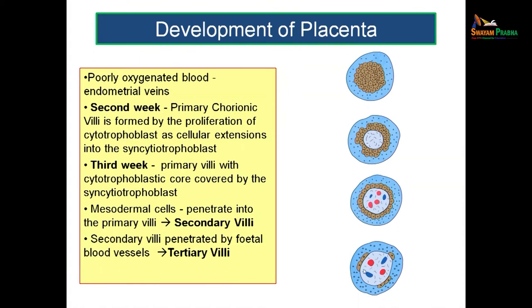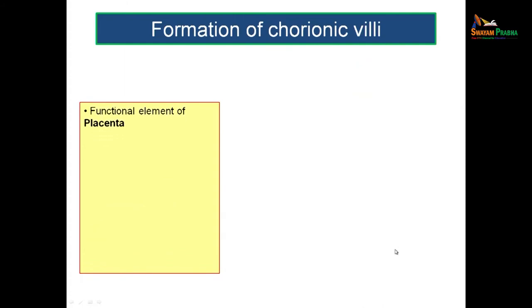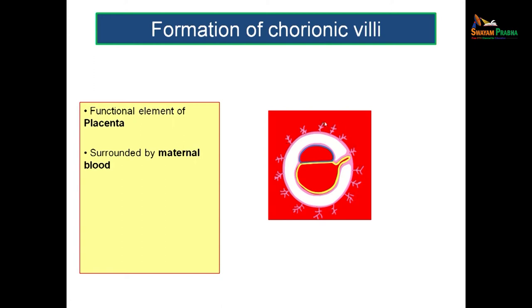Toward term, the fetal capillaries move toward the periphery and some cytotrophoblast cells become absent, making the villus a term villus. The chorionic villus is considered the functional element of the placenta. In the beginning, the entire blastocyst is covered by cytotrophoblast and syncytiotrophoblast, and from each cytotrophoblast layer the primary chorionic villi form, surrounded by maternal blood. The fetal capillaries are within the villi while the maternal blood surrounds them — they are not in direct contact.